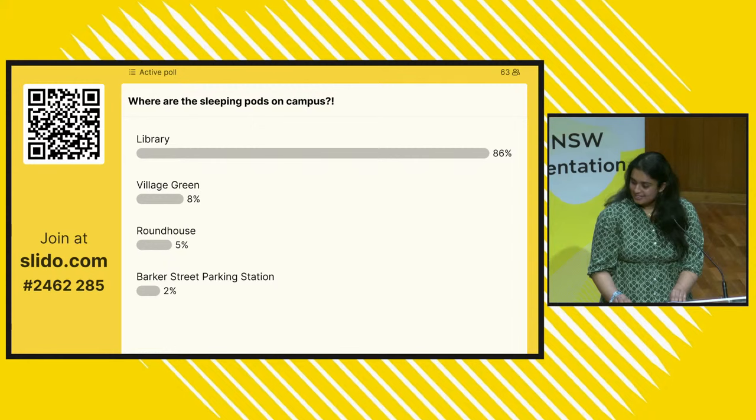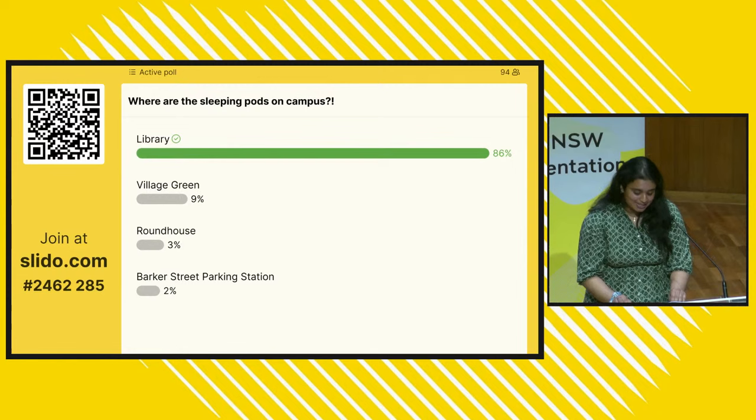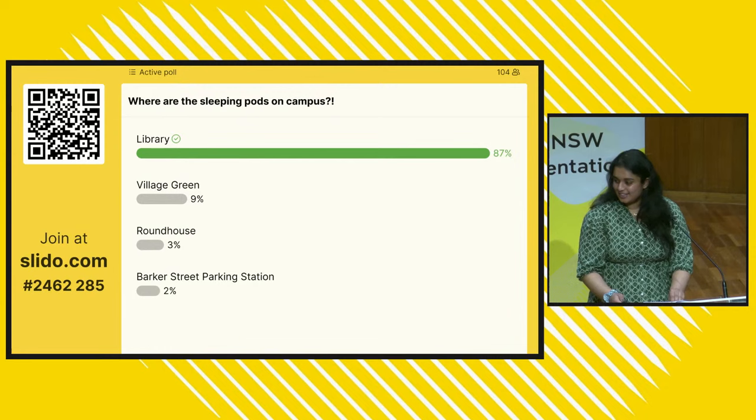Located on level three of the main library, these sleeping pods will deliver the ultimate sleep experience when you need some rest and can't make it back home between classes. Later we will tell you more about taking care of your health and wellbeing while studying here at UNSW.